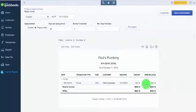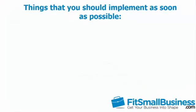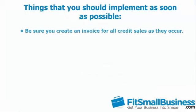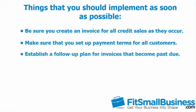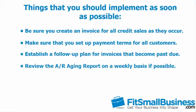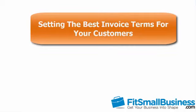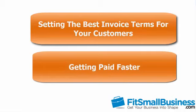By now you have a good idea of how the AR aging summary report can help you stay on top of unpaid invoices so that you can get paid in a timely manner. Here are a few things you should implement as soon as possible: First, create an invoice for all credit sales as they occur. Make sure you set up payment terms for all customers. Establish a follow-up plan for invoices that become past due — for example, what action will you take when they are in each bucket: 1 to 30 days, 31 to 60 days, etc. Review the AR aging report on a weekly basis if possible. For more tips, check out our article on setting the best invoice terms for your customers and getting paid faster — click here to access those articles.